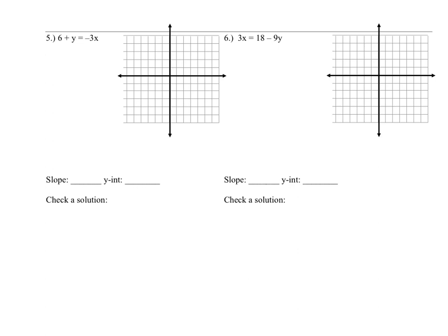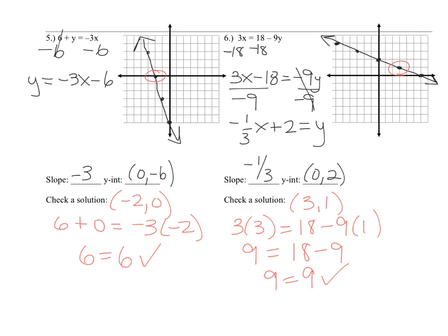For the next two problems, stop the video, try them without help, then come back to check. Here is what your line should look like — if your lines are in this place, you did it correctly. I picked (−2, 0) and (3, 1); you could have picked any ordered pairs on the line. For number 5, because the y-intercept was way down, I went up and to the left instead of down and to the right. For the other problem, the only unusual thing is that the y is on the right-hand side.